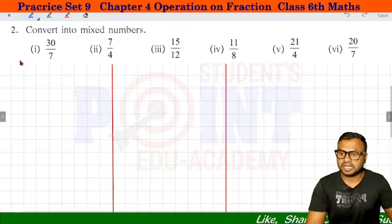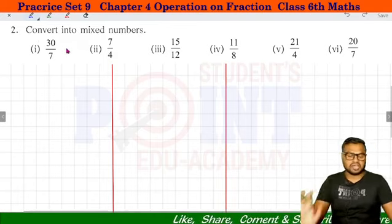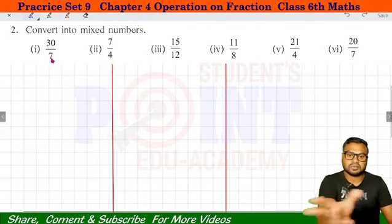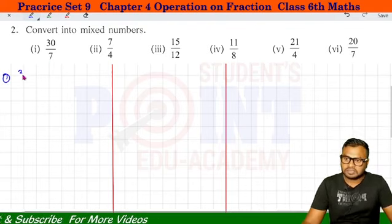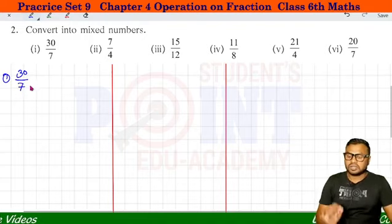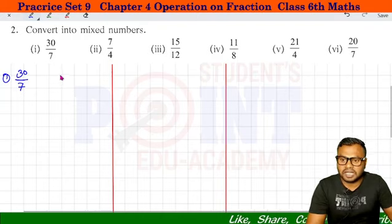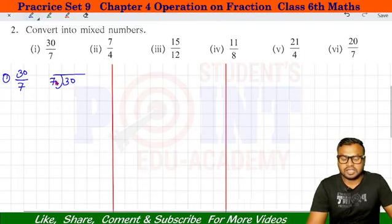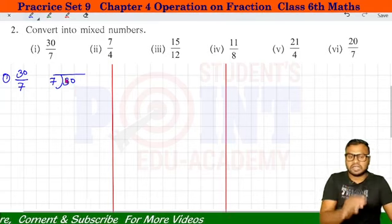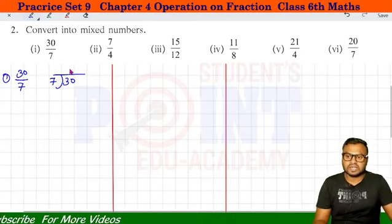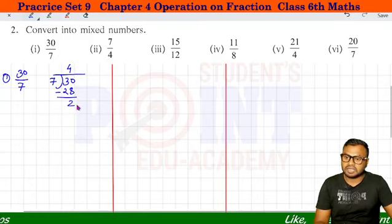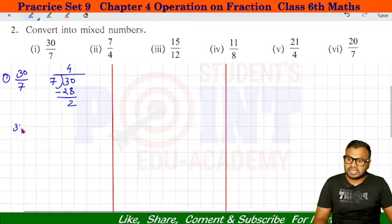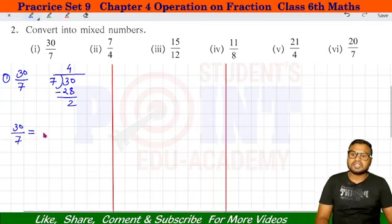Now let's start question number 2: convert into Mixed Fraction. First: 30 divided by 7. 7 table में 30 नहीं आता, छोटा नंबर 7 × 4 = 28, minus 2 remaining. So 30 divided by 7 is equal to Mixed Fraction.